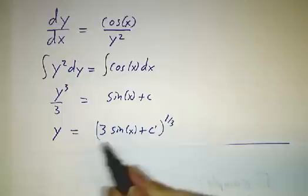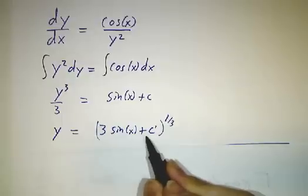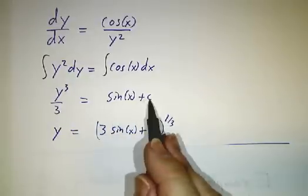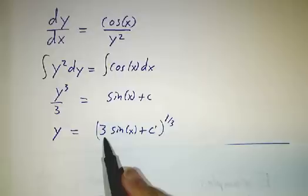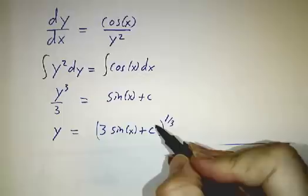So y is 3 sine of x plus a constant, all cube rooted. y cubed is 3 sine of x plus a constant, so y is the cube root of 3 sine of x plus a constant. And I marked that as a c prime